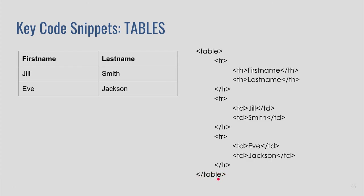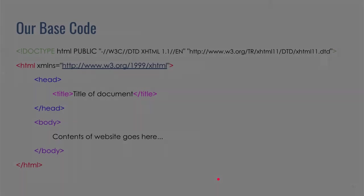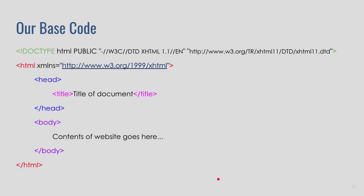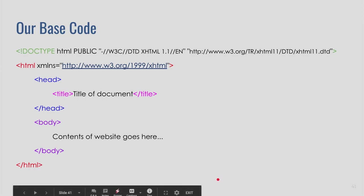It gets quite confusing when you're in Dreamweaver with a thousand lines of code, particularly if you haven't ordered or formatted it in a way conducive to reading. So those code snippets — I want you to have a play around with them in TextEdit. I'll take us back to our base code, and if you click on the next video, I'll get you started on how we do this in TextEdit.